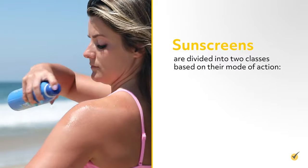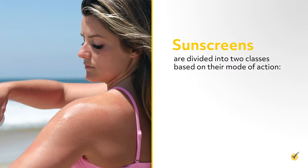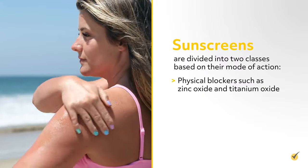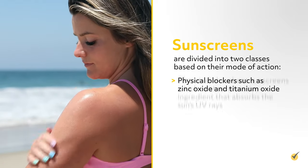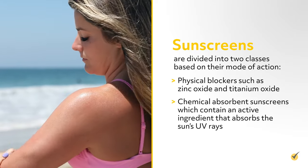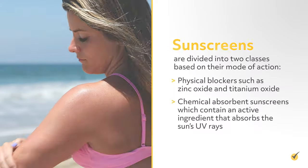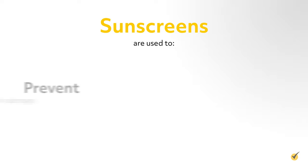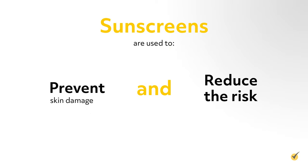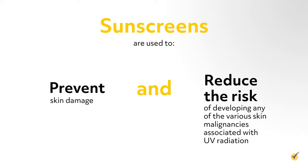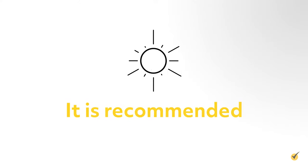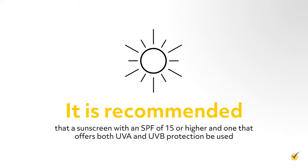Sunscreens are divided into two classes based on their mode of action: physical blockers such as zinc oxide and titanium oxide, and chemical absorbent sunscreens which contain an active ingredient that absorbs the sun's UV rays. Sunscreens are used to prevent skin damage and reduce the risk of developing skin malignancies associated with UV radiation. It is recommended that a sunscreen with an SPF of 15 or higher, offering both UVA and UVB protection, be used.